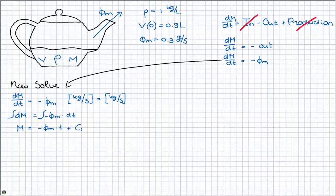What I will get then is mass of the water is minus Vm times t plus the constant. People forget the constant all the time, so please don't forget it. Then, to find out what c1 is, I will need an initial condition.